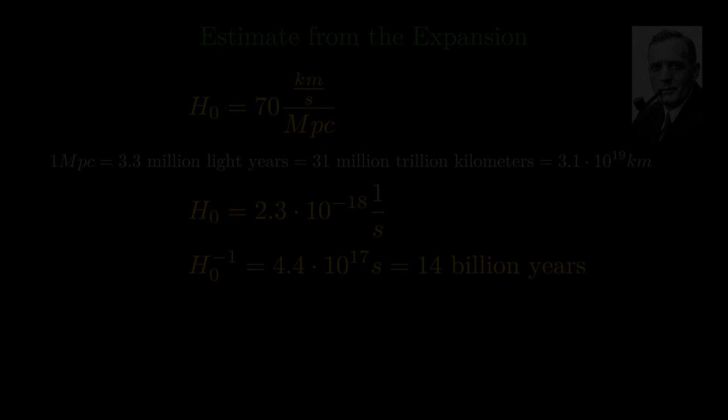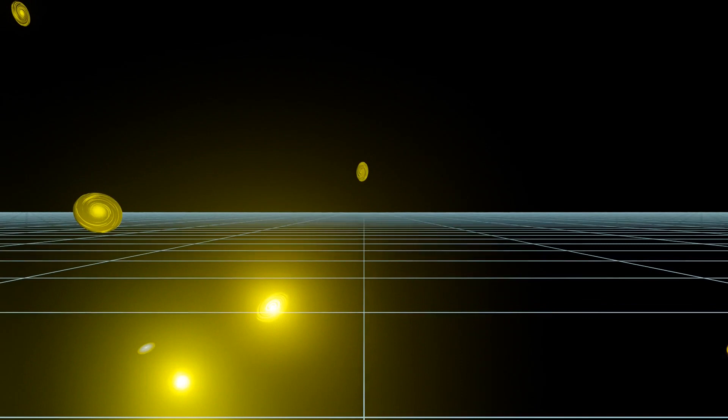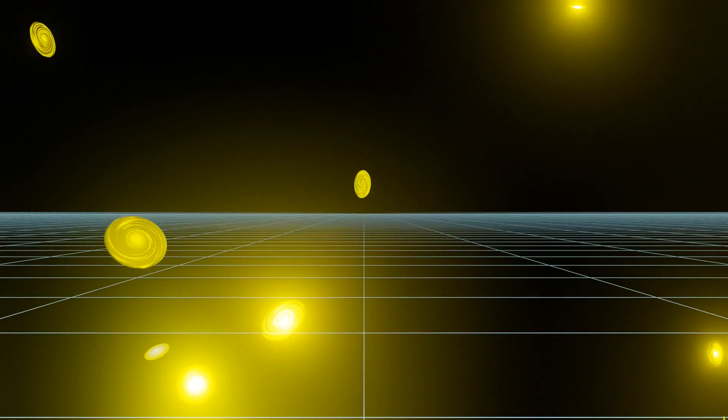Due to the expansion of the universe, the separation between galaxies becomes larger and larger. When we go back in time, the galaxies were much closer to each other. When general relativity is used to trace back the history of the universe, the distances between all galaxies vanished 14 billion years ago. Shortly before this moment,